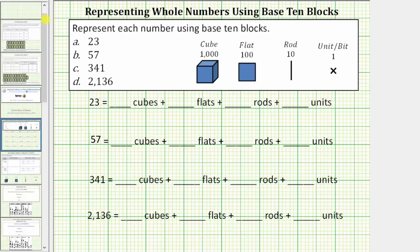For our work we'll say 23 equals zero cubes plus zero flats plus two rods plus three units. To record the model, we'll use this notation for unit, a rod, a flat, and a cube. So for two rods plus three units, we have two segments and three small x's.